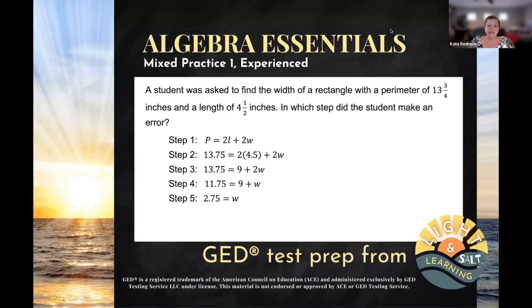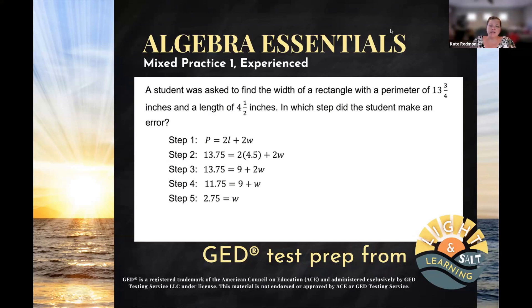Hey algebra students, let's practice a few GED math test skills at the same time with this example. A student was asked to find the width of a rectangle with a perimeter of 13 and three quarter inches and a length of four and a half inches. In which step did the student make an error?